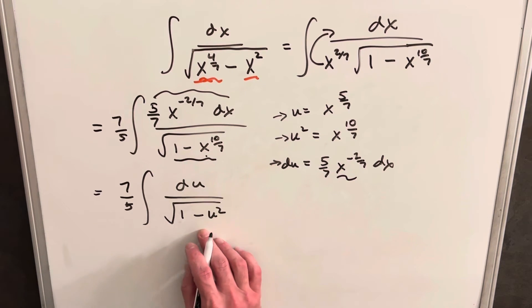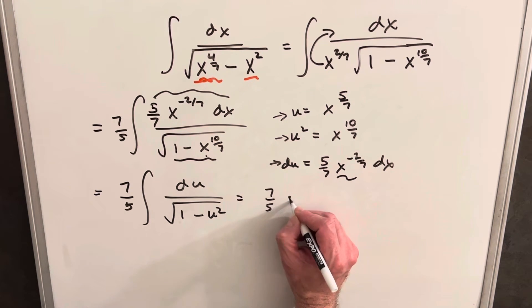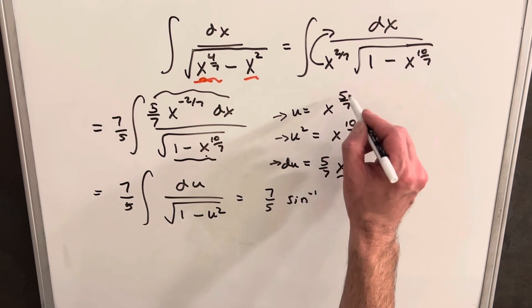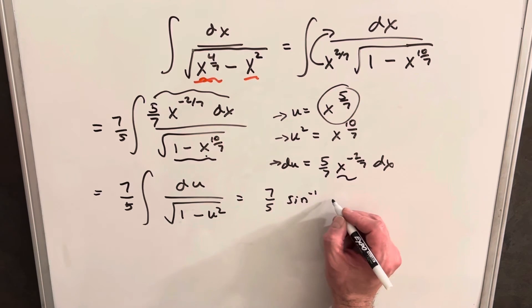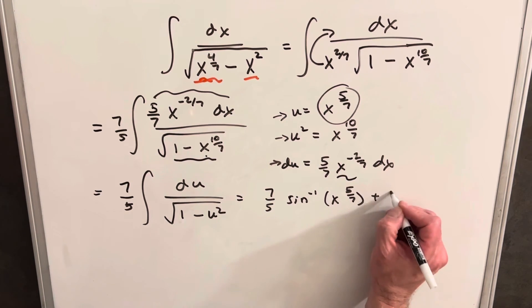Okay, and this is a very common integral in u. We'll just have our seven fifths, and this is going to be arc sine or inverse sine of u. I'm just going to do it all in one step. Our u is x to the five sevenths, plus c.